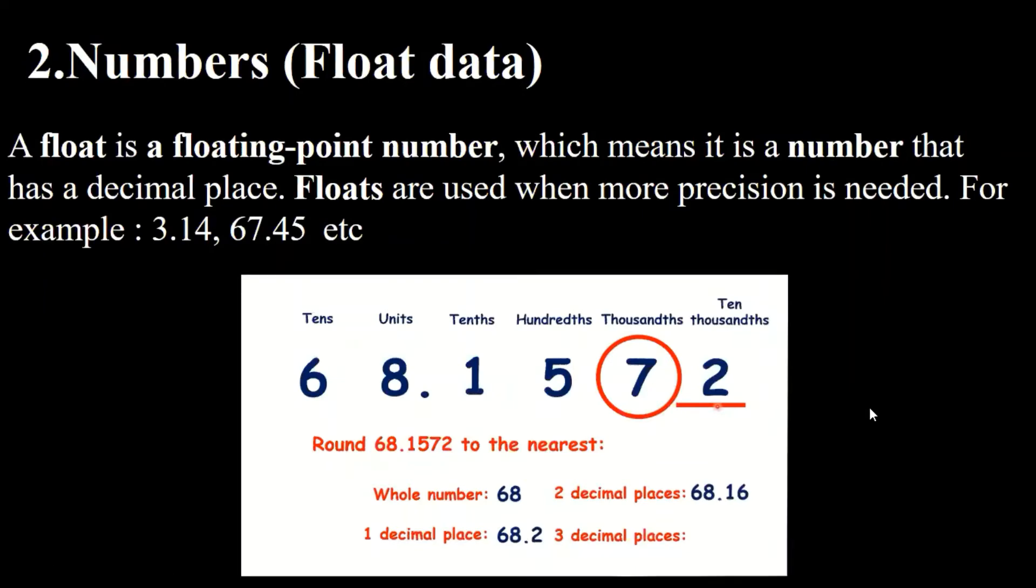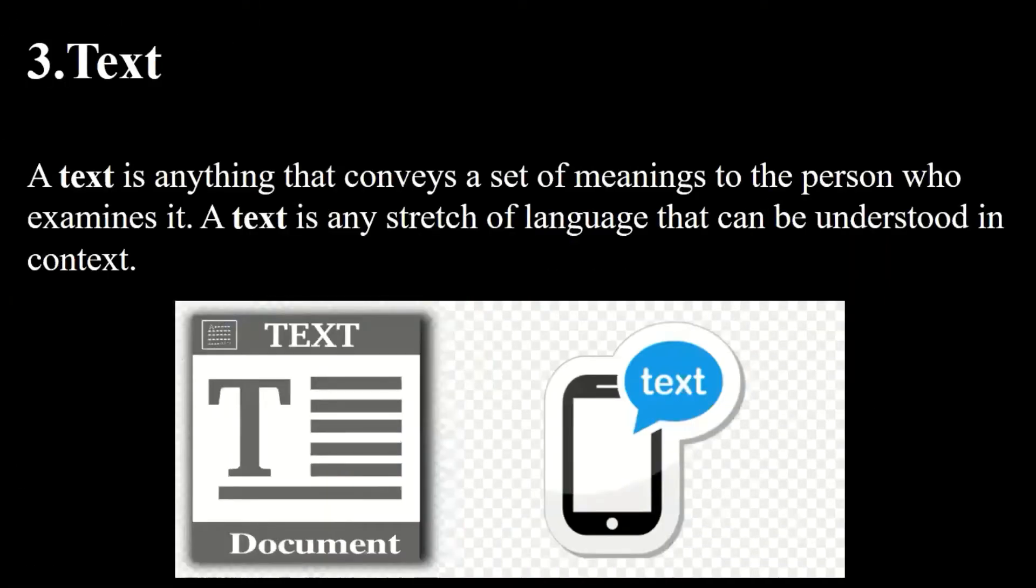So let's see the next one: text data. A text is anything that conveys a set of meanings to the person who examines it. A text is any stretch of language that can be understood in that context, means anything you write in form of any kind of language or alphabets plus numbers and special characters. That is called text in computer.